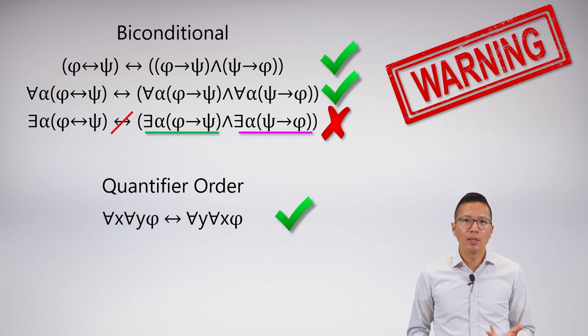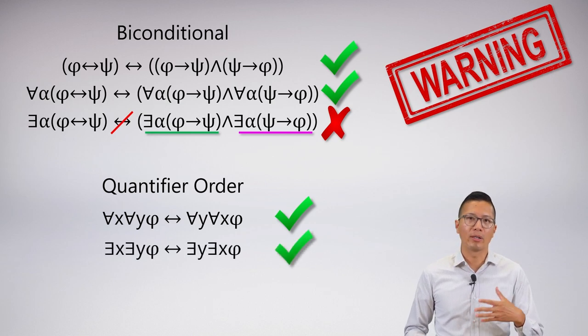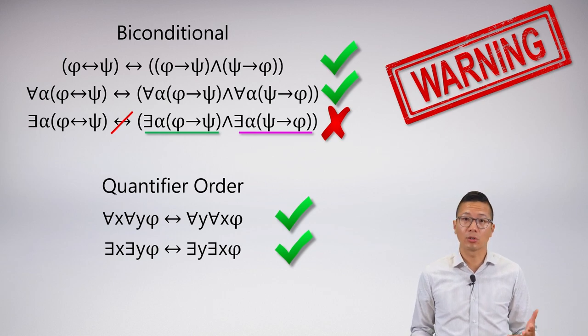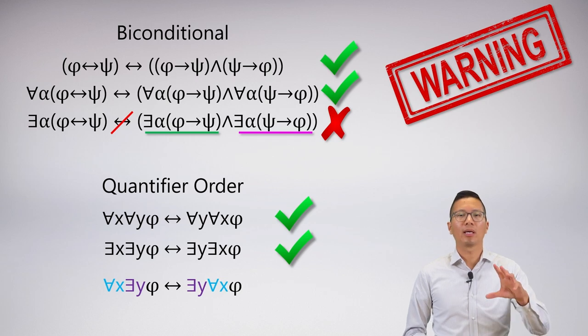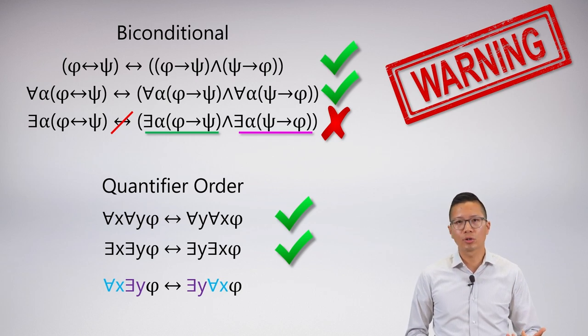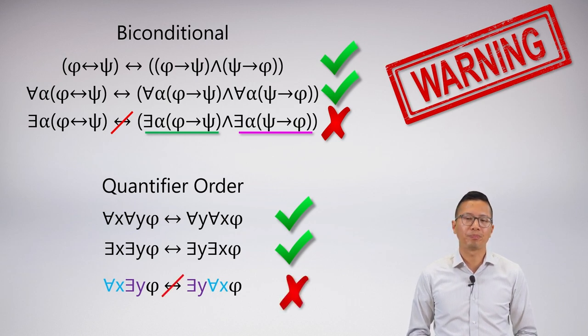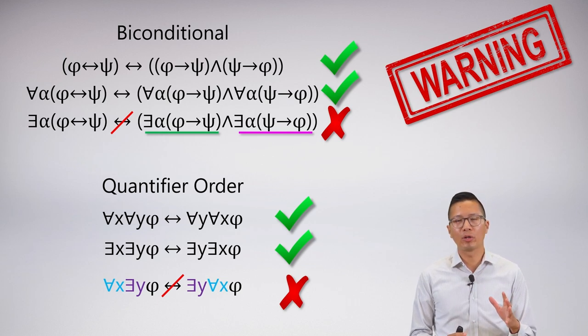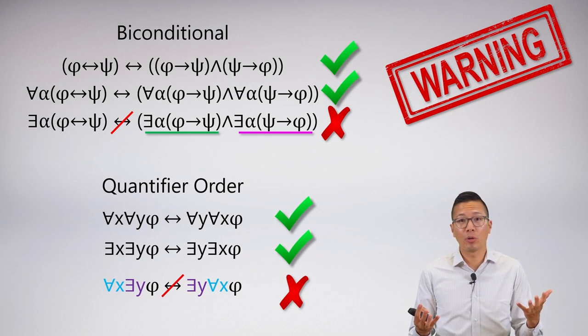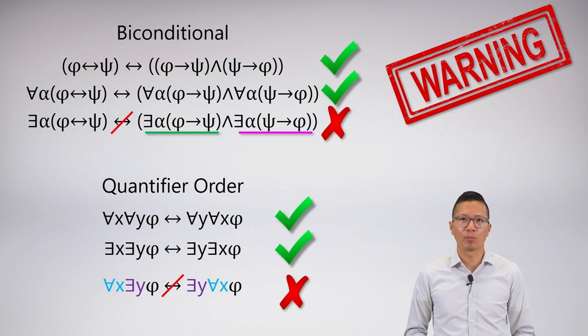Can you do this with the existential? If you have there exists an x, there exists a y, can you swap the order to be there exists a y, there exists an x, and have it have the same meaning? Turns out the answer is yes, no problem. Now what if you have a mix of quantifiers? If you have a universal followed by an existential, can you switch the order so you have an existential and then a universal? Are these always going to be logically equivalent? And here it turns out the answer is no. So this is important to know. You don't want to just be messing around with quantifier order when you have different quantifiers. You can mess around with the order if they're the same quantifiers, I'm not sure why you would want to, but you can. It's when they're different that we come up with problems.